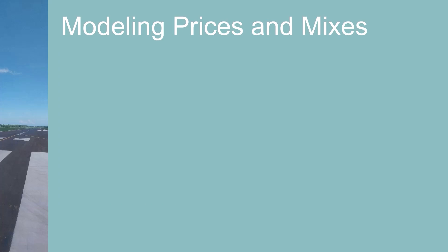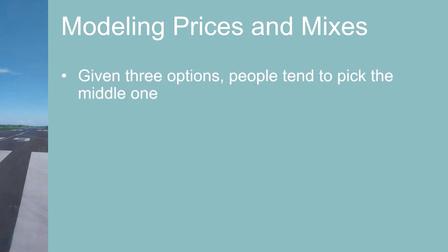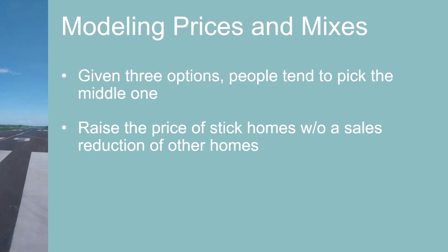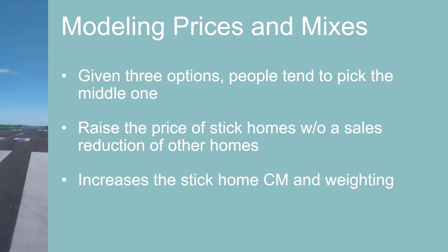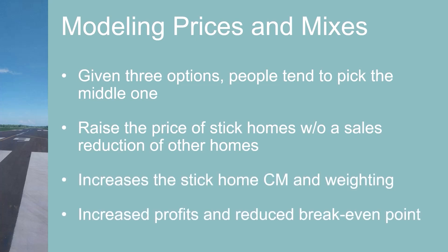The pigs could use the CVP formula to model different prices and mixes of their three types of homes, potentially finding a price point and mix that maximizes profit and reduces break-even sales. Behavioral finance studies show that people tend to pick the middle option when presented with three choices. The pigs may find they can raise the price on the middle-priced sticks house without reducing sales of the other two products, dramatically increasing profits and reducing the break-even point.